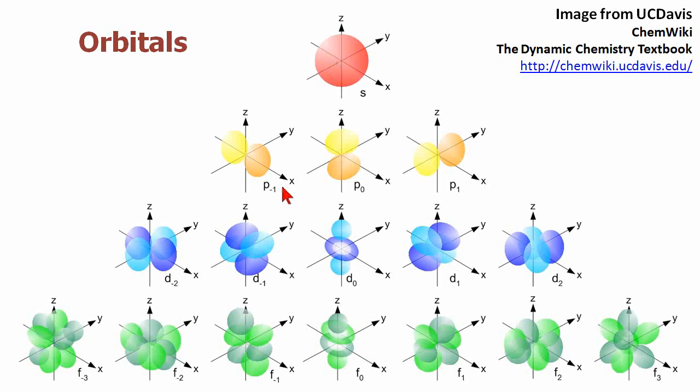When we get into the P orbital, they'll hold a maximum of one, two, three types of orbitals with two electrons each, so that's six electrons. And they spin like this, three-dimensionally.